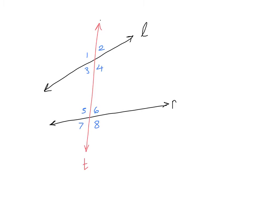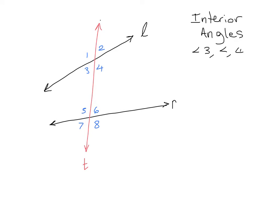These angles have different names. In between those two coplanar lines — on the inside — we have what are called interior angles. Our interior angles, between line L and M, are angle three, angle four, angle five, and angle six.